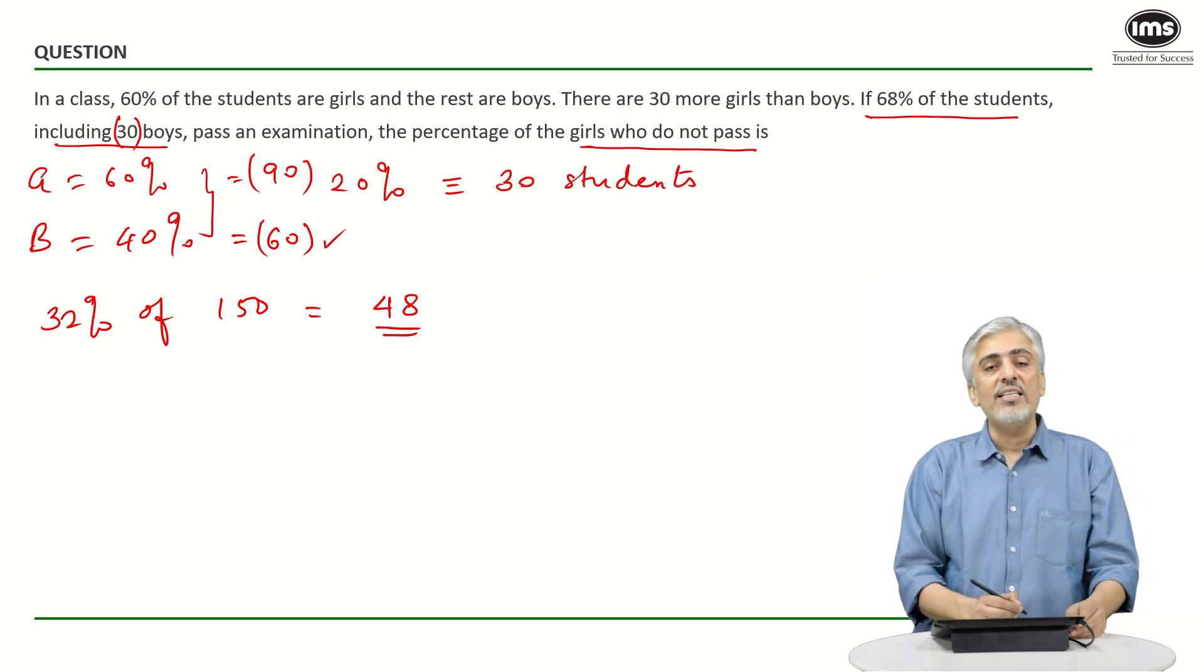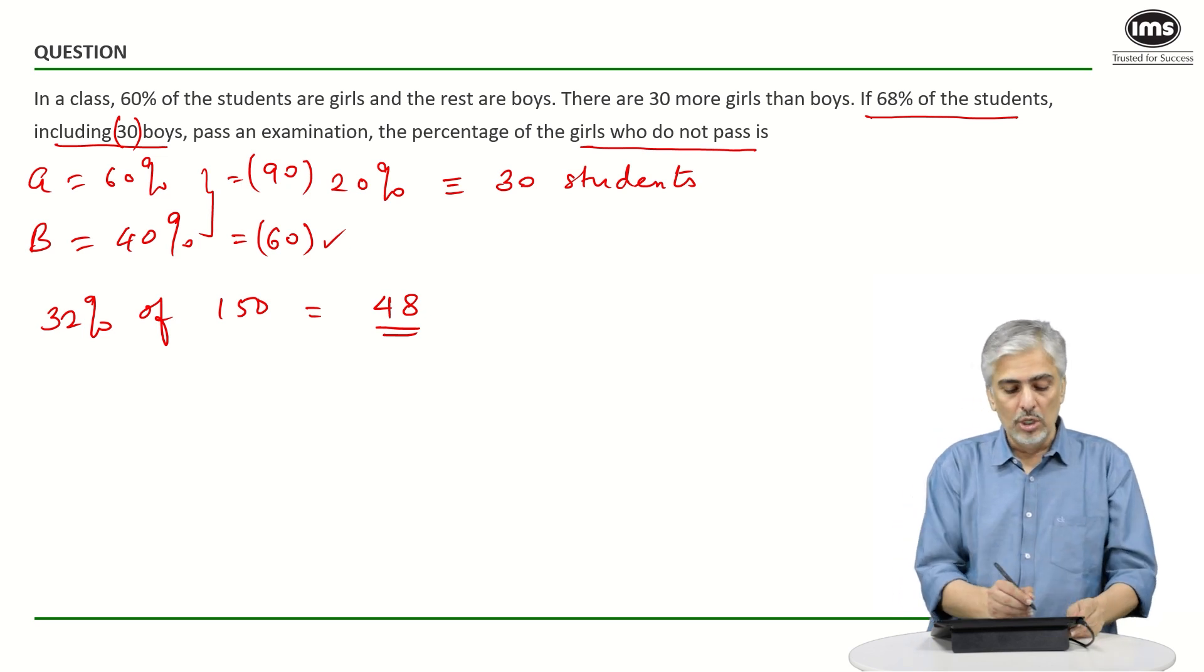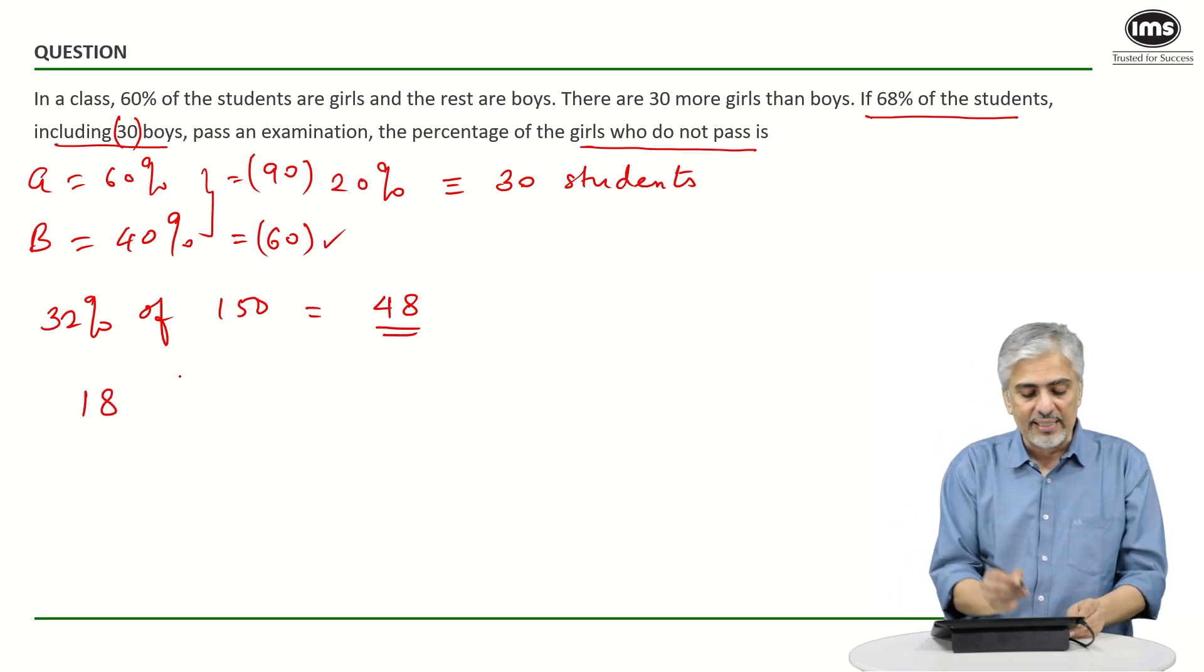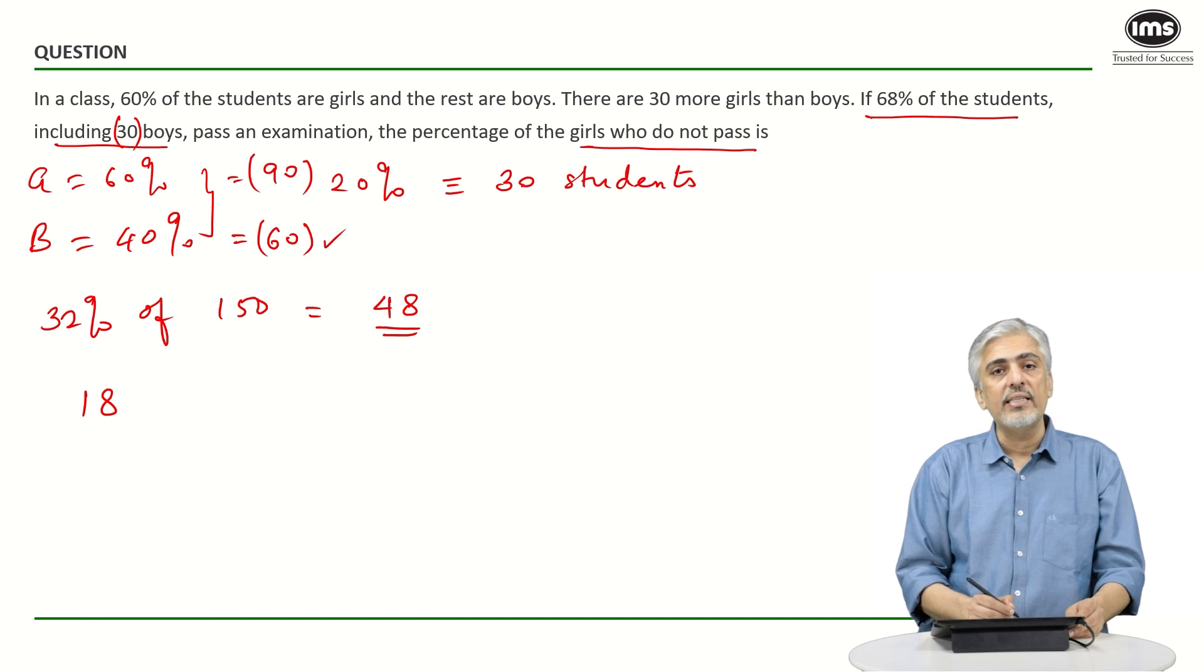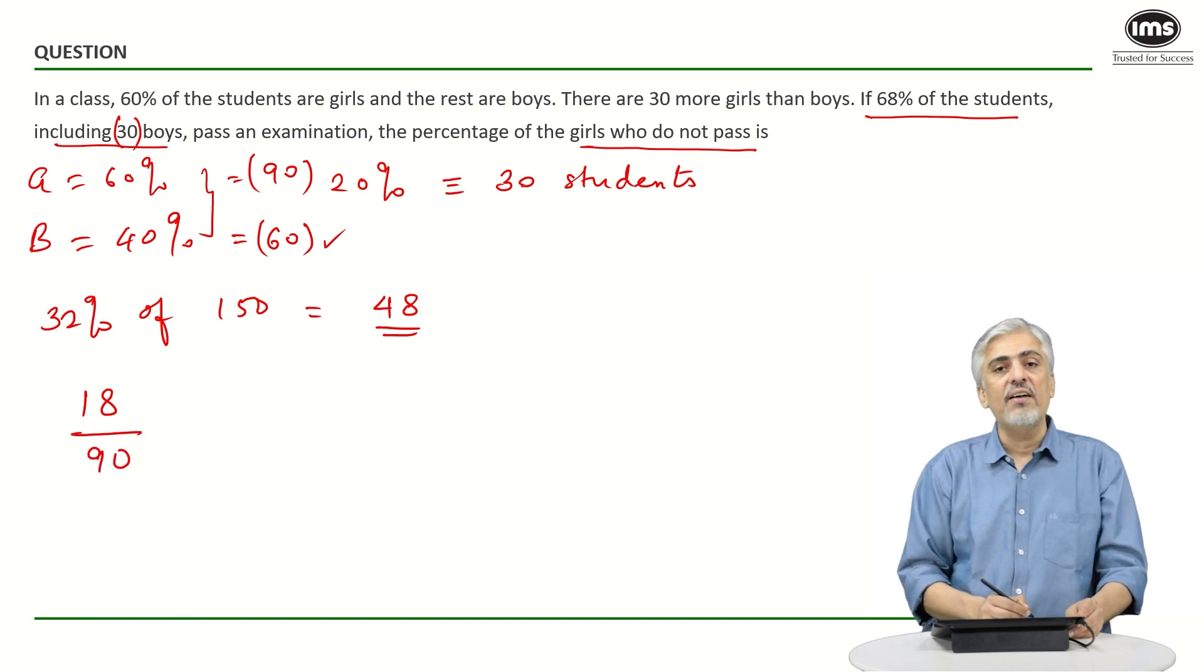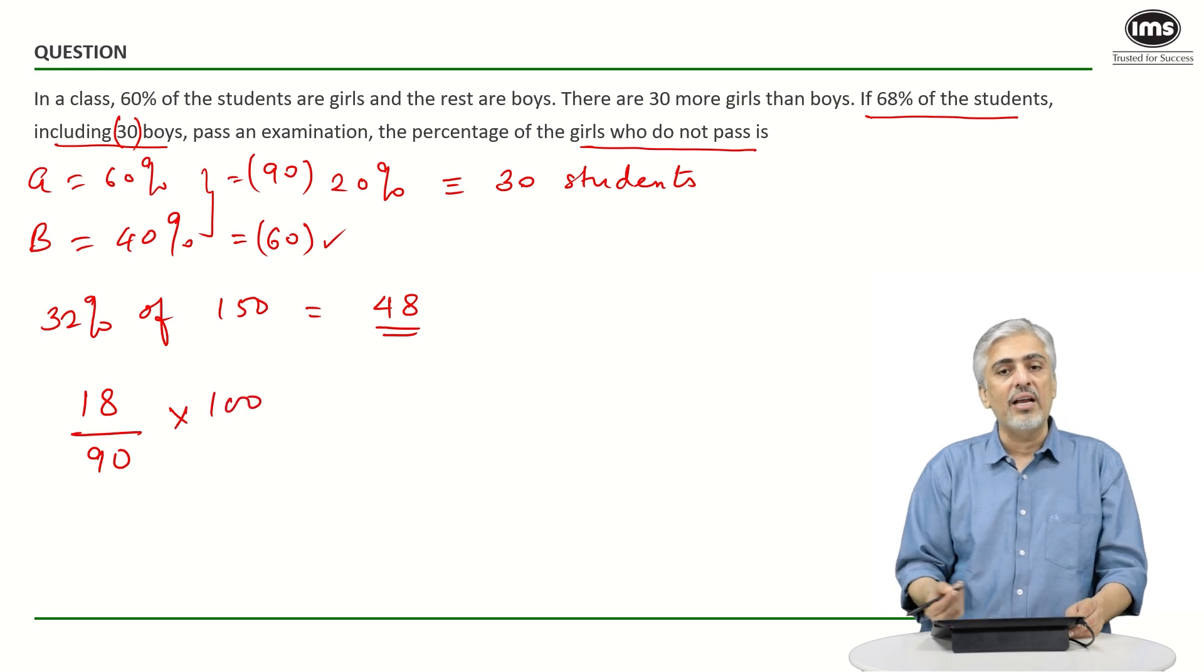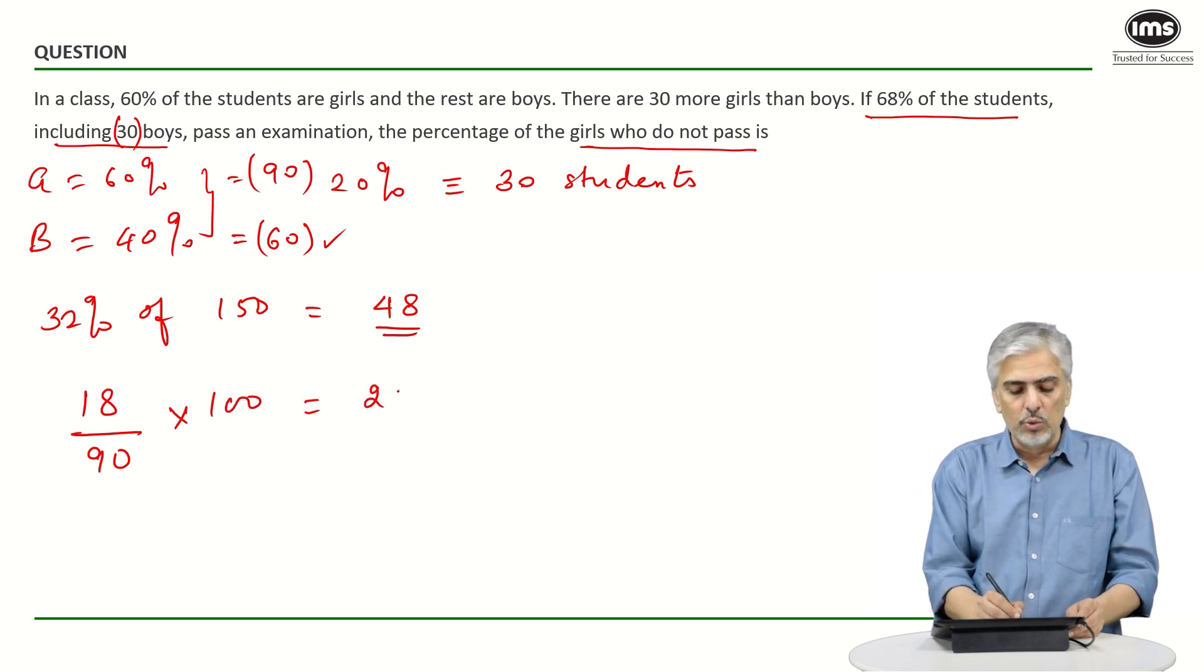So 48 students have not passed the examination, out of which 30 boys had not passed. So the number of girls who did not pass is 18. 18 out of 90 girls have not passed. Converting that to a percentage: 18 upon 90 is 1 by 5, which is 20%.